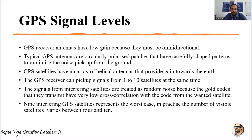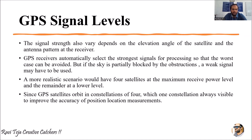Three more satellites surrounding the correlated satellite and the GPS receiver will be considered. In practice, at least nine satellites will be interfering in the worst case. Signal strength also varies depending on the elevation angle of the satellite and the antenna pattern of the receiver.